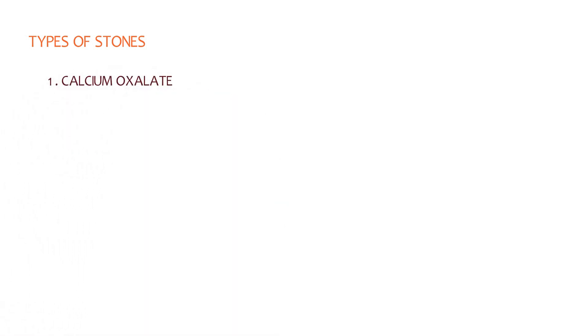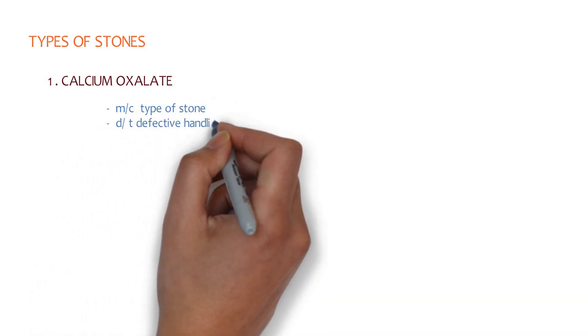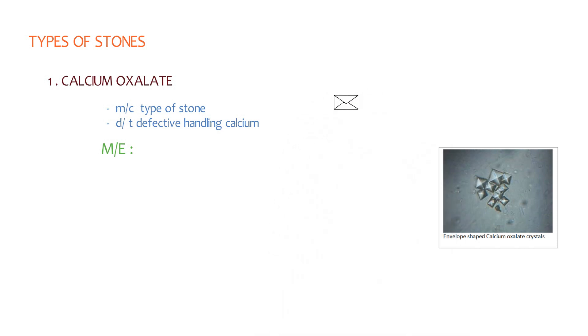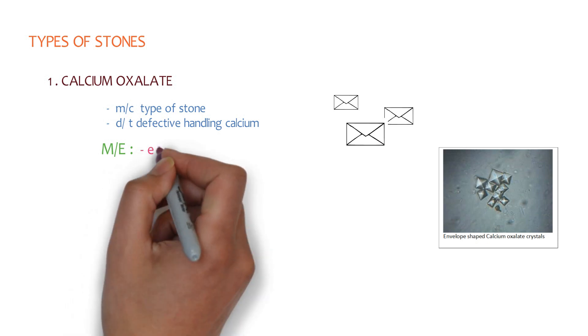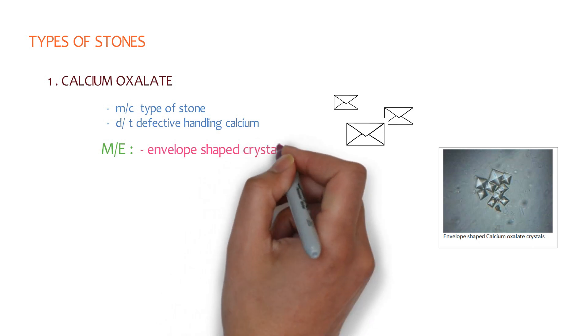The first one is calcium oxalate. It is the most common type of stone and is due to defective handling of calcium. Look over here - these are envelopes, and in microscopic examination the stones appear just like this. In microscopic examination, the shape of these crystals is just like an envelope. Treatment is specific for different types of stones; we will discuss treatment after discussing all types of stones.